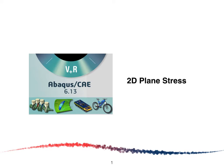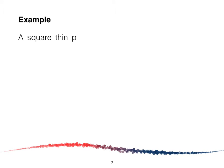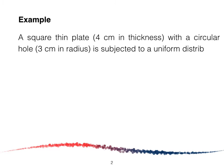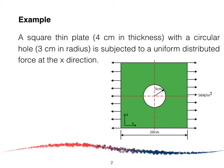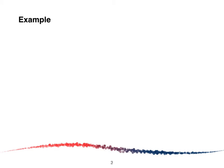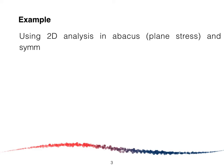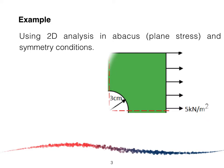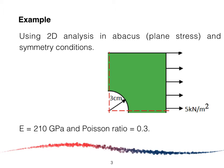This tutorial is about two-dimensional plane stress using Abaqus. A square thin plate, 4 centimeters in thickness with a circular hole of 3 centimeters in radius, is subjected to a uniform distributed force in the x-direction. The length of the plate is 20 centimeters and the pressure applied is 5 kilonewtons per meter squared. We are going to model this using symmetry conditions in Abaqus. The Young's modulus is 210 GPa and the Poisson's ratio is 0.3.